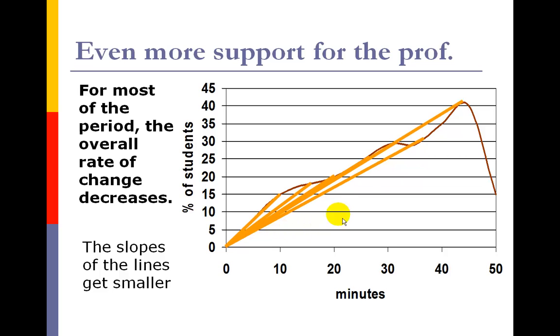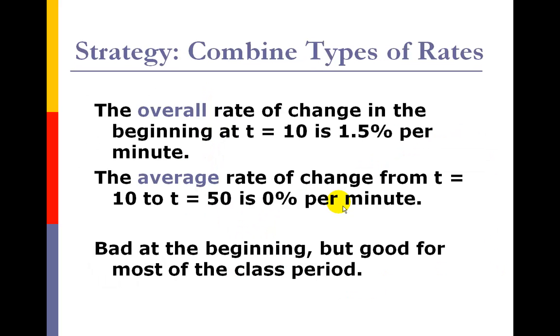And there we go. Smaller again. Smaller again. And that's the first time it actually went back up. And then smaller again. So what I'm looking at here is an example of the overall rates of change are getting smaller because these slopes, these lines are getting less steep. So the professor comes back and says, wait a minute. Things are actually improving because people are falling asleep at a less rate. The rate of students falling asleep is actually getting smaller.